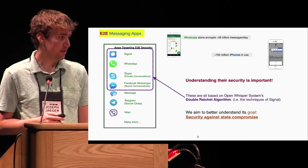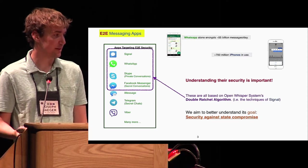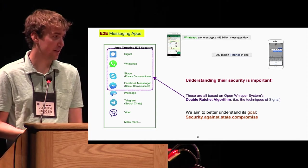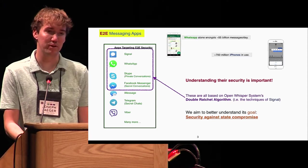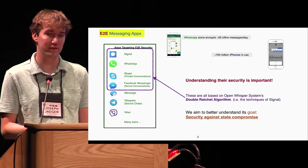In my talk, we're motivated by the double ratchet algorithm used, for example, by Signal. In particular, we're trying to gain a better understanding of the goal it's aiming for, which is communication in the face of state compromise.